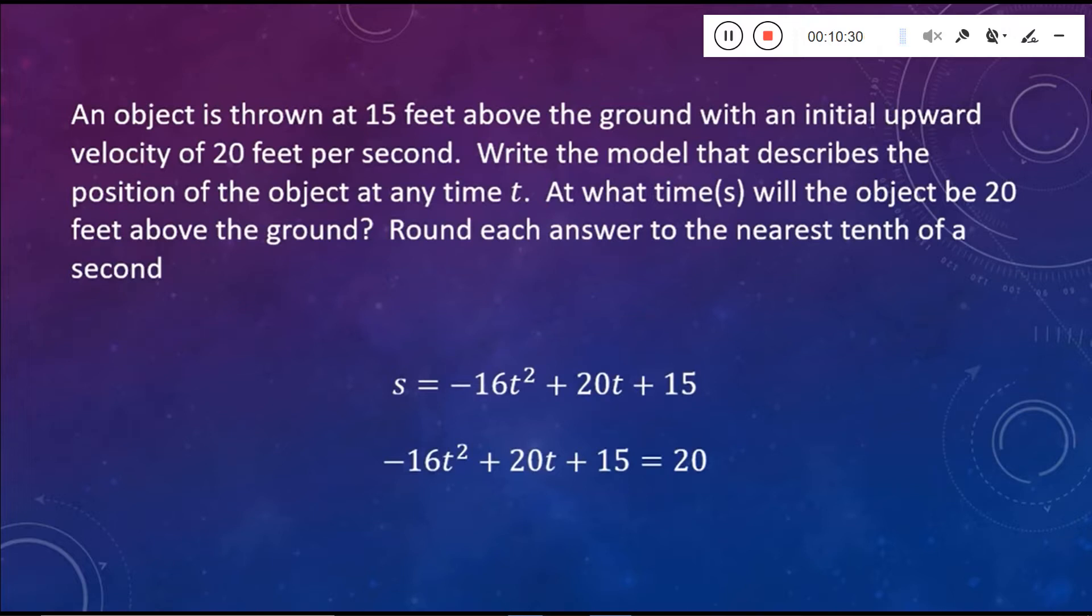So now we're going to actually answer the second part of our question. We want to know at what times will the object be 20 feet above the ground? This function here, s, gives us the height at any time t. So we want to know when that height will equal 20. So I'm going to take my model here, negative 16t squared plus 20t plus 15. And I'm going to set it equal to a positive 20. And then I'm going to solve for t.